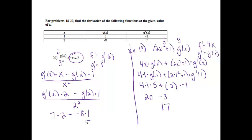g prime of 2 using the chart is equal to 7 times 2 minus g of 2 is equal to negative 8 times 1, and then all over 2 squared is 4. So this ends up giving me 14 plus 8 over 4, which is 22 over 4, which you could leave like that, or if you did reduce it, it would be 11 halves.